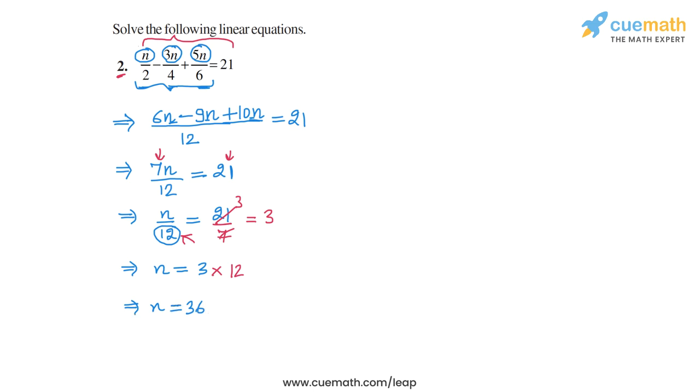Now a slightly alternate way of solving the same equation is to take the LCM of the denominators 2, 4 and 6. The LCM is 12. And multiply both sides of the original equation by this LCM, because that will convert all the coefficients into integers. And it might be easier to do the calculations then.